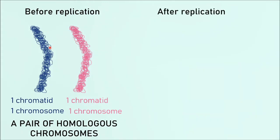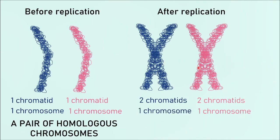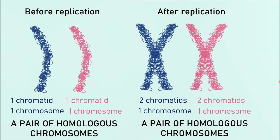After replication, we now have two chromatids here and two chromatids here. However, we still refer to each as one chromosome — we're just missing the word 'duplicated'. They still have the same genes; this time there will be four genes, not two, but they are still a pair of homologous chromosomes. When we talk about cell division, specifically meiosis, we refer to a pair of homologous chromosomes — or four chromatids in total — as a bivalent.